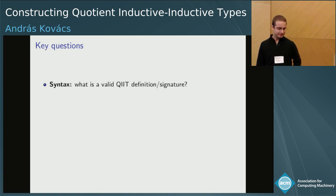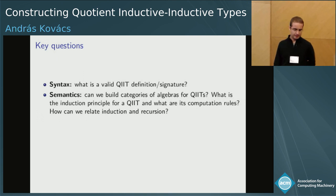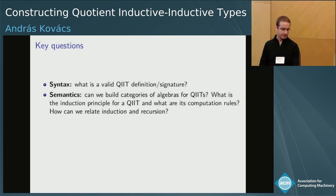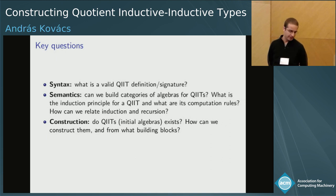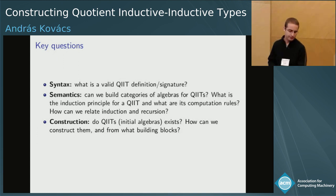The key questions are: What is a valid QIIT signature? In an actual implementation, we would like to write a QIIT signature checker in a proof assistant, so we need to make this very precise. For semantics: can we build categories of algebras for QIITs? What is the induction principle and the computation rules? How can we relate induction and recursion? And for construction: do these QIITs or their initial algebras actually exist? How can we construct them, and from what building blocks? This also relates to consistency — if we add QIITs to a type theory, do we have a consistent theory?